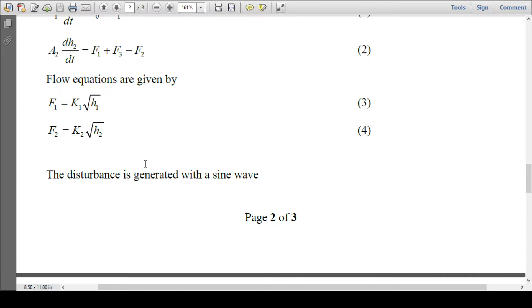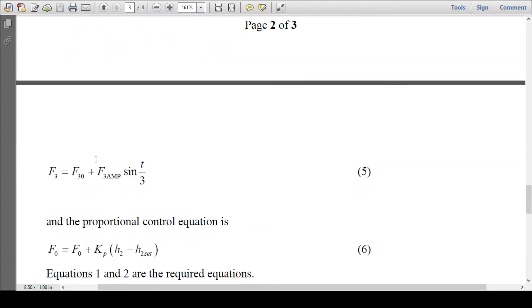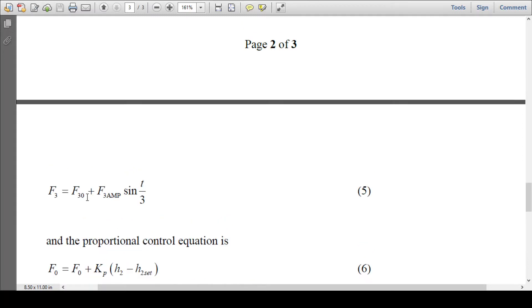Now, disturbance is generated with a sine wave, which is given by F3 = F3_0 + F3_Amp sin(t/3).